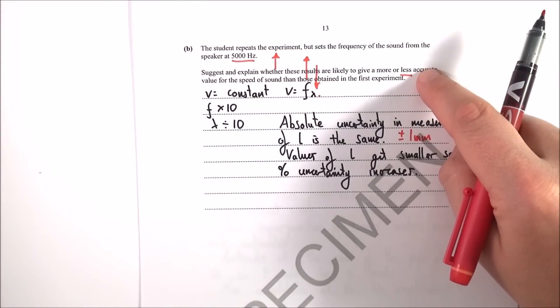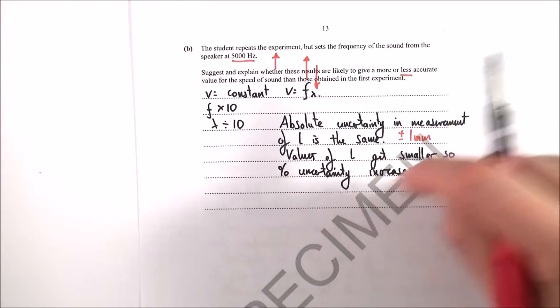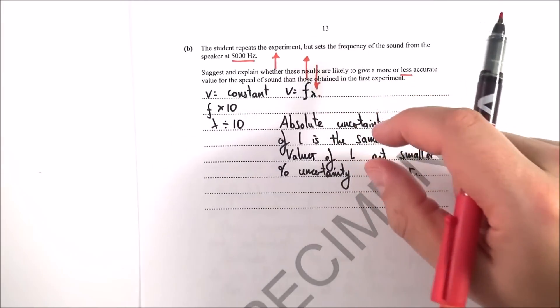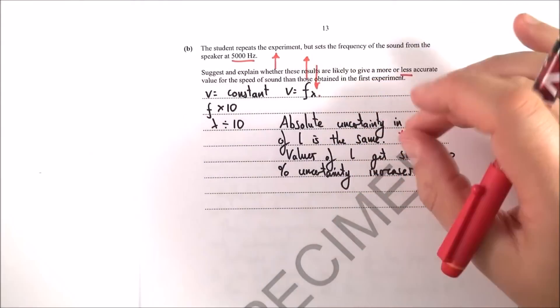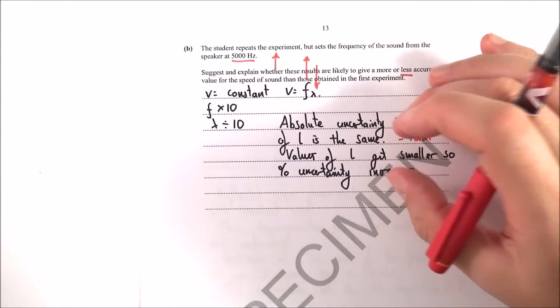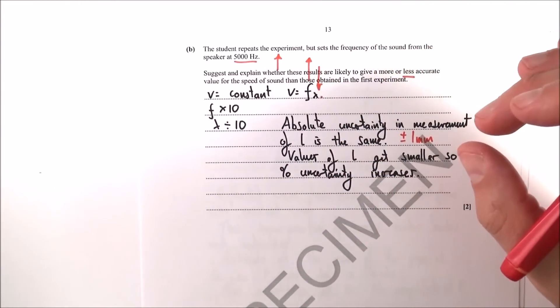This means the value for the speed of sound will be less accurate. Make sure to write this up as a clear, well-structured sentence rather than just listing the facts.